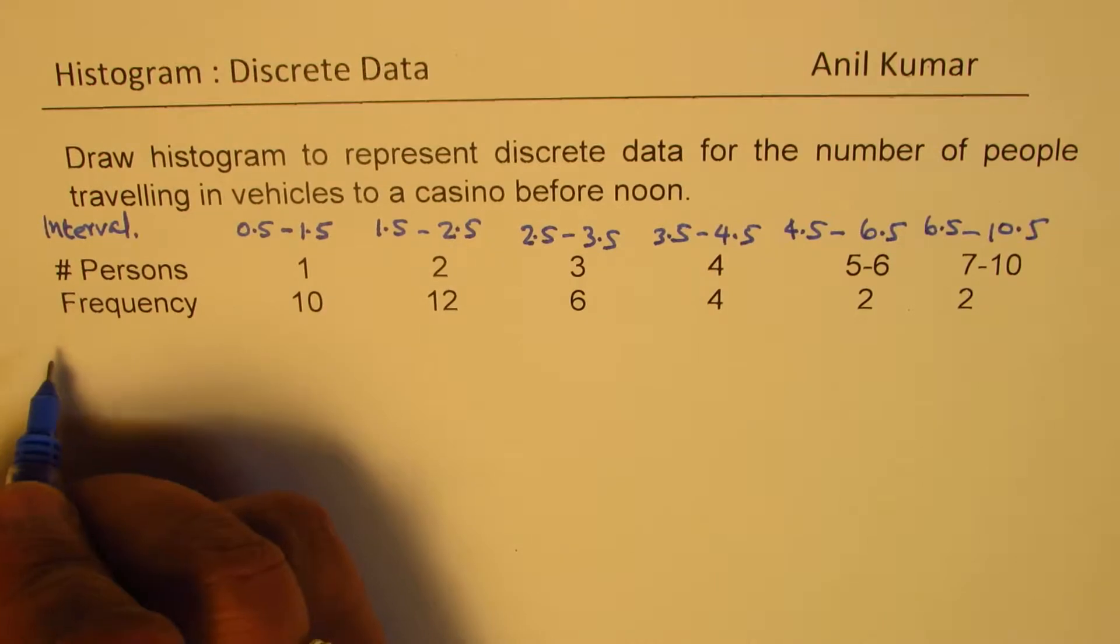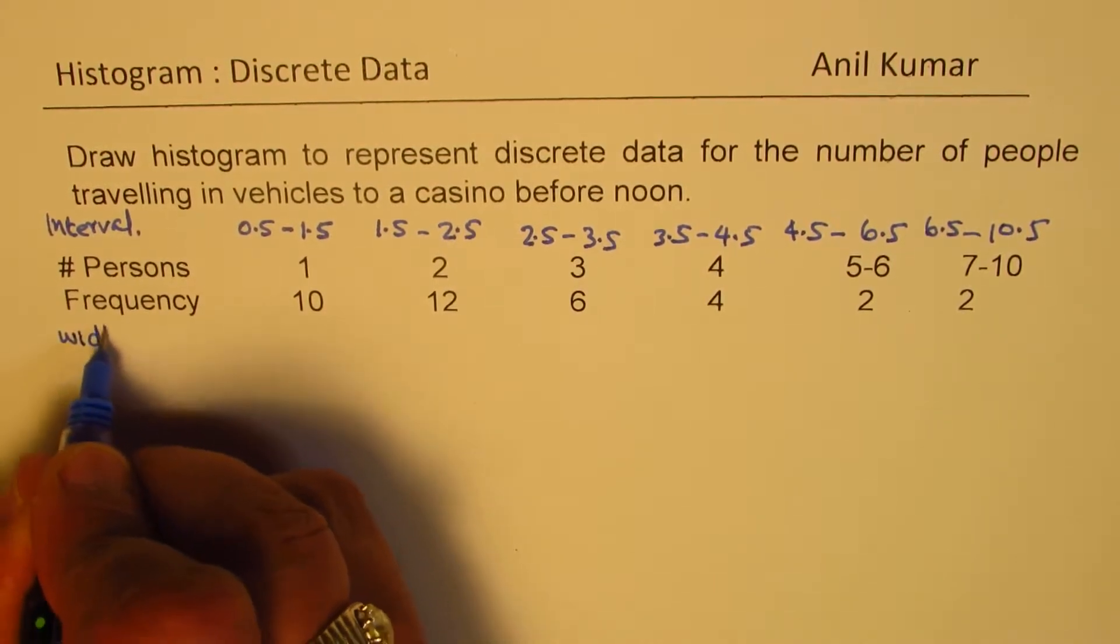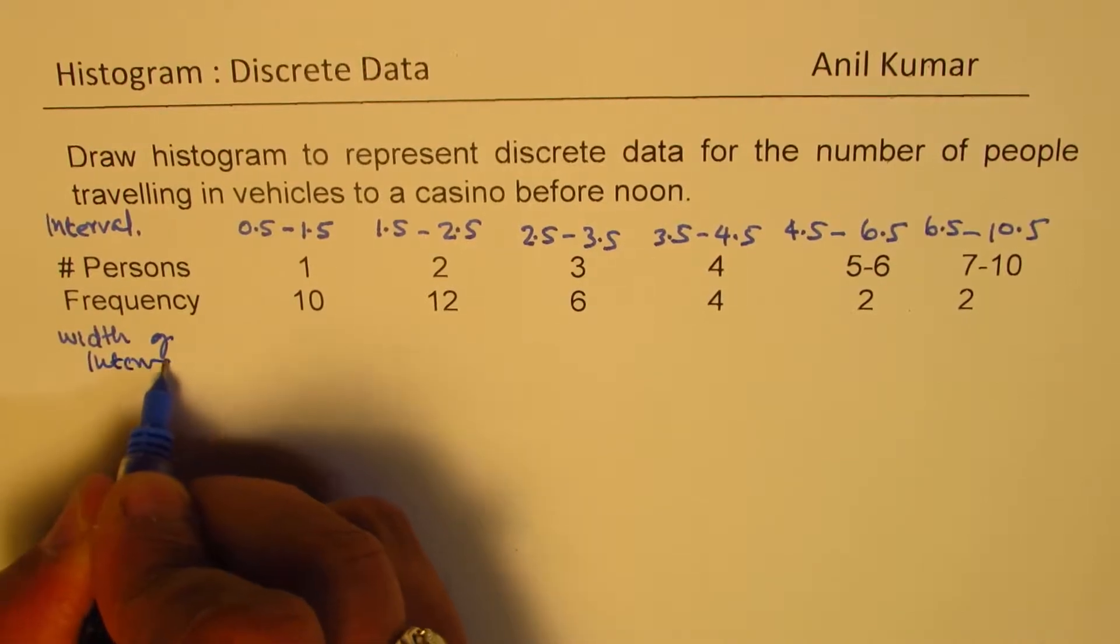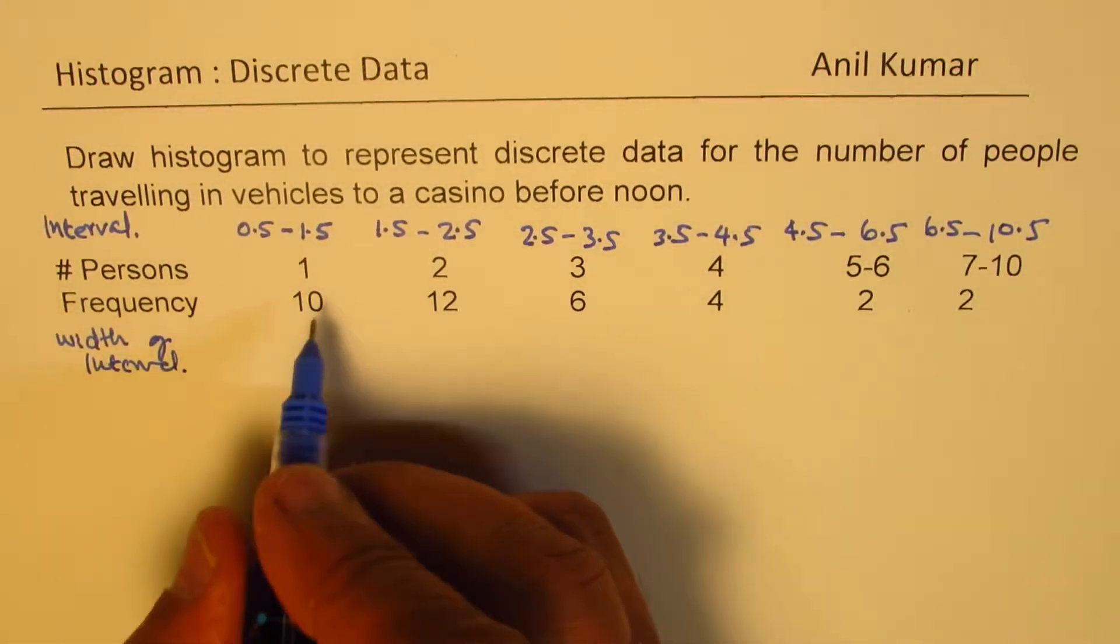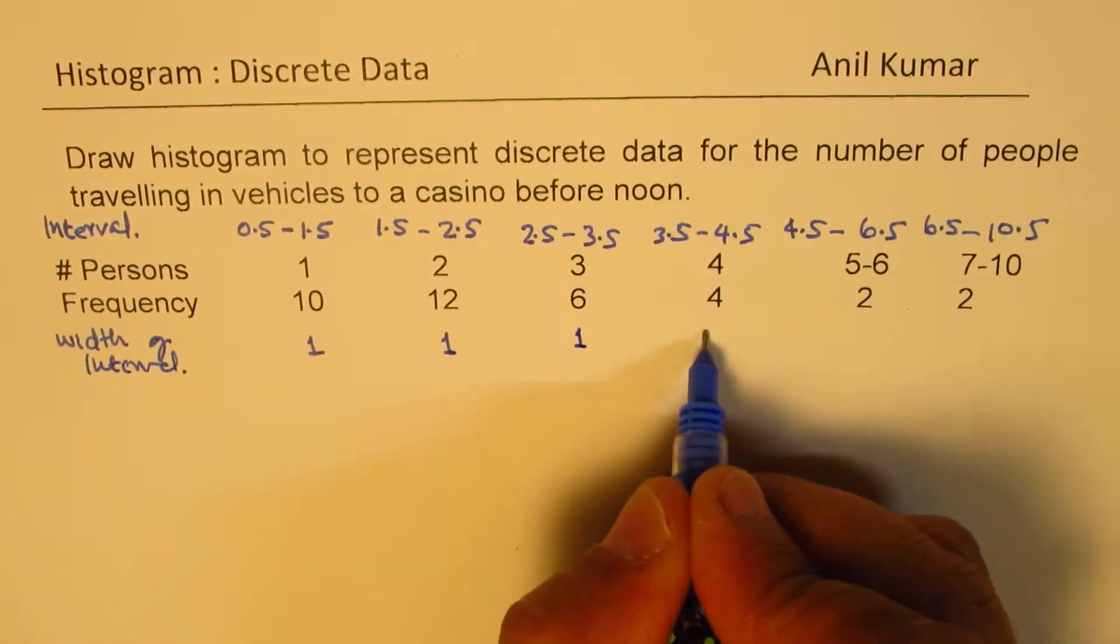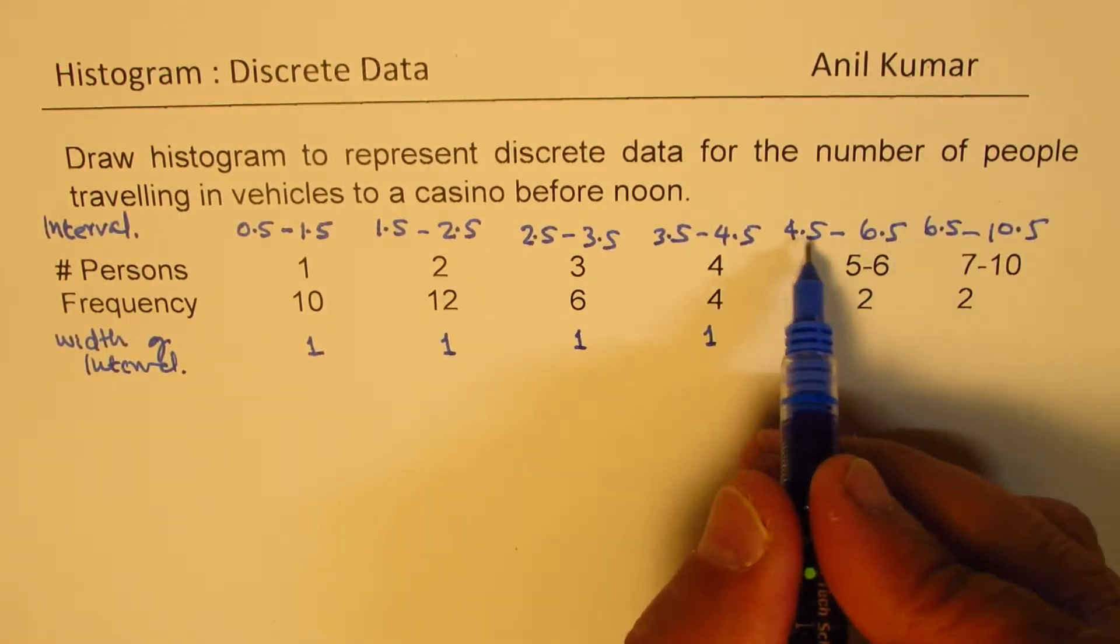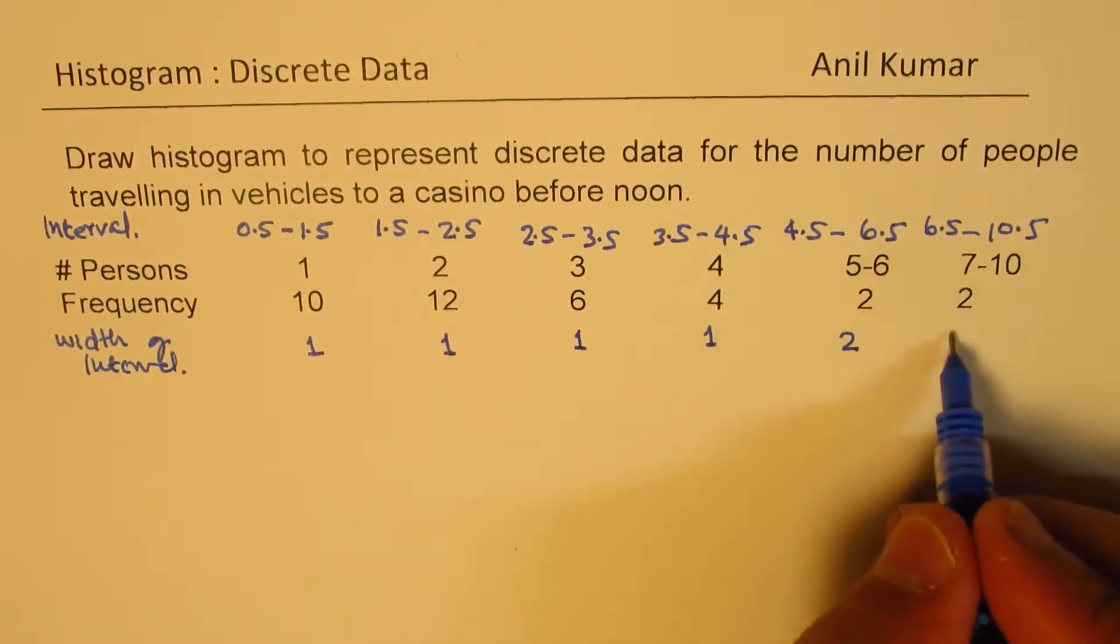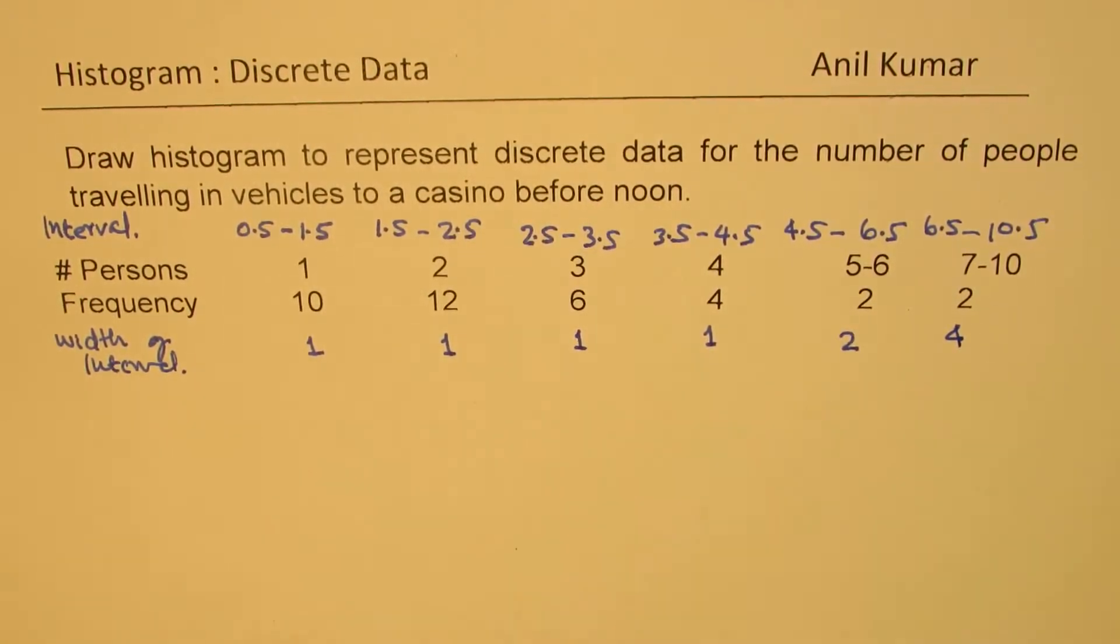Now, let's talk about the width of interval. So the width of interval here is 1. Here again it is 1. Here again it is 1. Here also it is 1. However, 6.5 minus 4.5 is 2. And 10.5 minus 6.5 is 4. So these are your widths of intervals.